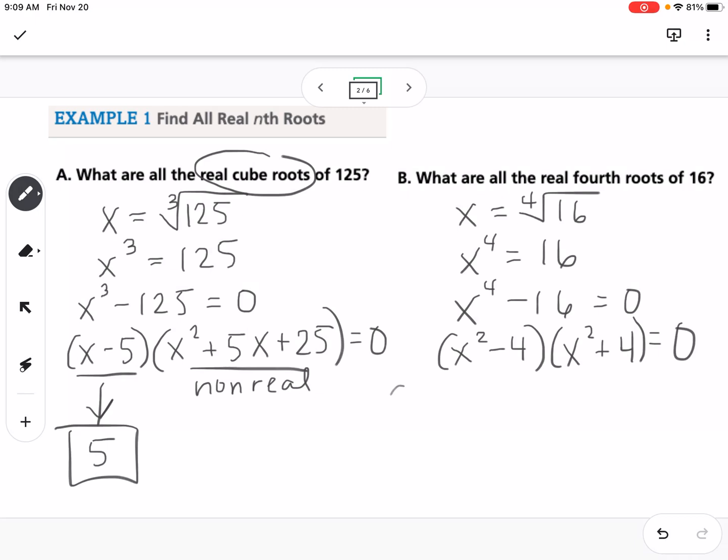And then this is also a difference of squares. So x plus 2, x minus 2, and x squared plus 4. So here we would have negative 2, positive 2. And then this right here we know is going to be non-real.